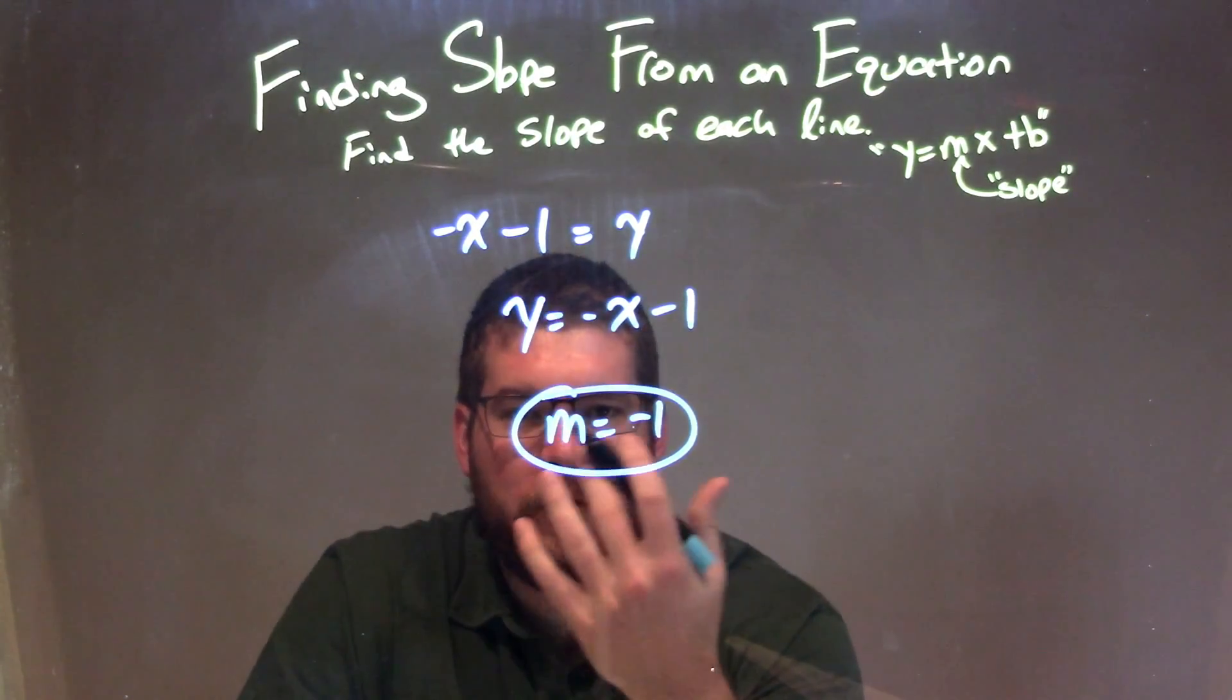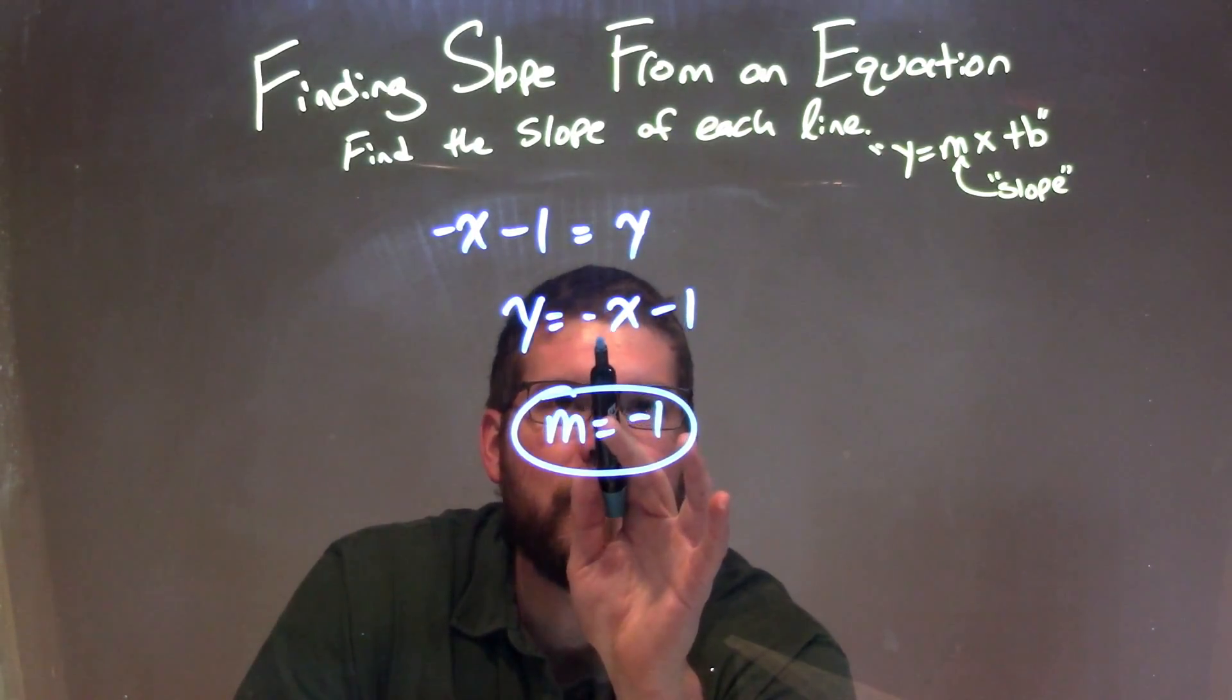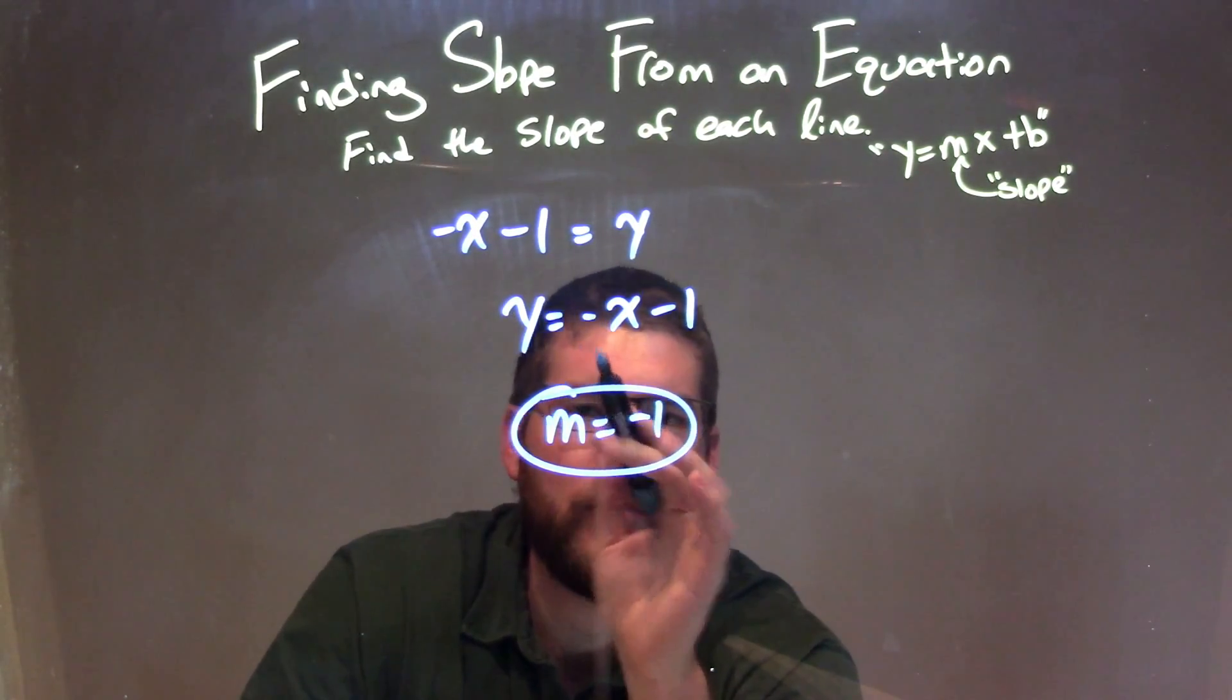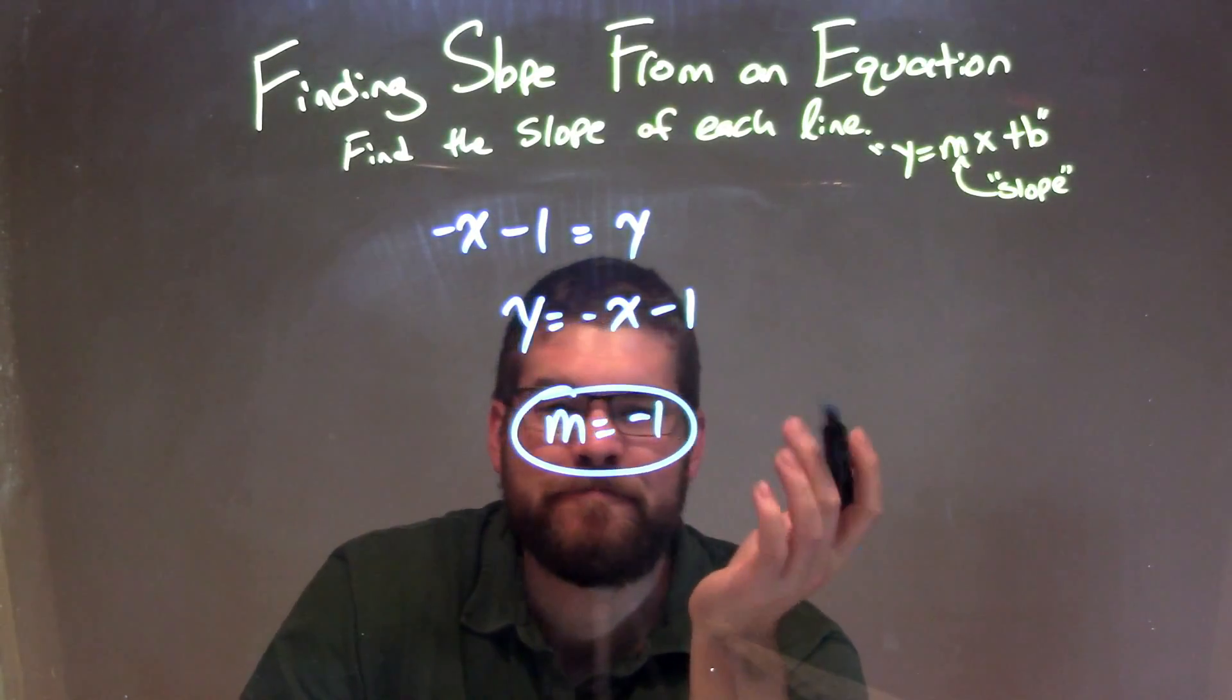The m value is the coefficient in front of x, and the coefficient, which is tricky sometimes, in front of x here, since there's nothing written, it's just a 1, and since there's a negative, it's negative 1. And so my final answer for slope here is just m equals negative 1. So let's do it again.